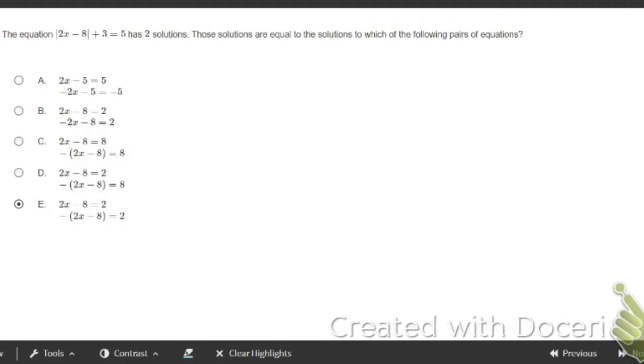So on this one you have to have some understanding of what absolute value is doing here. Remember, this is just saying hey, this is going to give us a positive number to make it five, right? So some positive number plus three equals five.